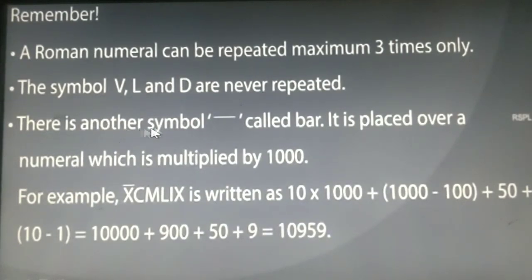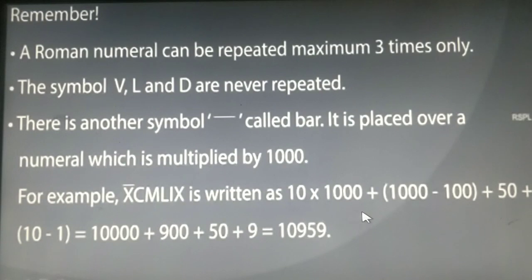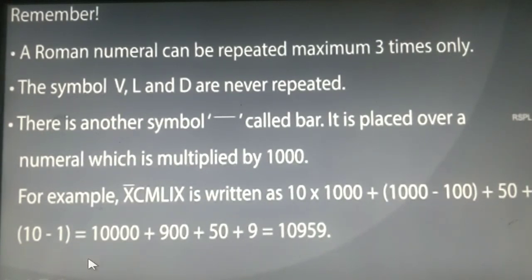There is another symbol called the bar. It is placed over a numeral which is then multiplied by 1000. For example, X-bar (X̄) represents 10 into 1000. So X̄CMLIX gives you 10,000 plus 1000 minus 100 plus 50 plus 10 minus 1, which equals 10,000 plus 900 plus 50 plus 9, giving you 10,959.